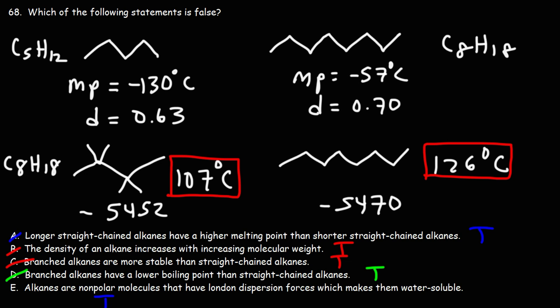Alkanes are non-polar. The CH bond is non-polar, and there's no other functional group in an alkane. All molecules also have some extent of London dispersion forces acting on them.